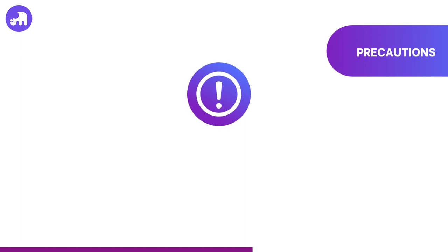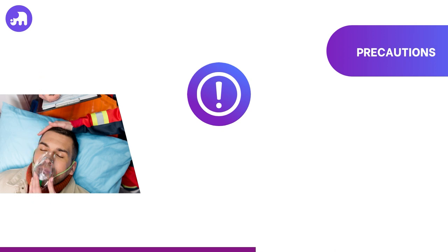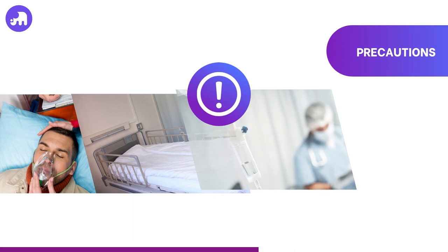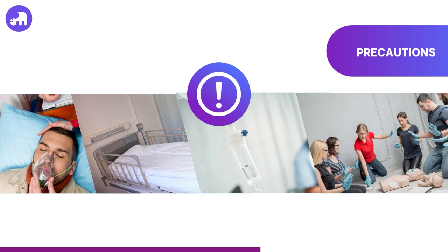When carrying out ALS defibrillation, several vital precautions are paramount to safeguard both the victim and the rescuers. Care must be taken to prevent oxygen from a bag valve mask from flowing onto the victim's chest during shock delivery, as this poses a significant fire hazard. It's equally crucial to keep the victim away from contact with metallic fixtures like bed rails, which can cause burns. Most importantly, avoid any situation where individuals, including responders, could have direct or indirect contact with the victim during defibrillation, including potential contact through medical apparatuses such as IV fluid bags and invasive lines. Prior to initiating defibrillation, the all-clear message should be clearly conveyed and acknowledged by all present.